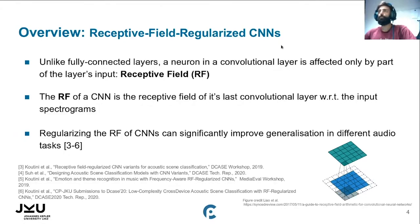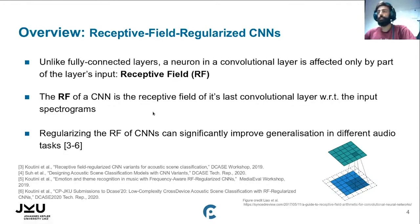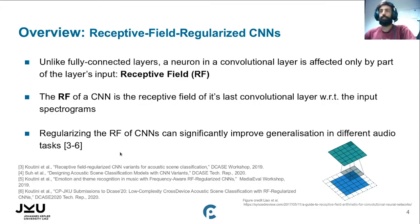Unlike fully connected layers, a neuron in a convolution layer is only affected by part of the layer input. This is what we call the Receptive Field. An input outside the Receptive Field doesn't affect the neuron activation or output. We define the Receptive Field of the whole CNN as the receptive field of the last layer with respect to the input spectrograms. Regularizing the Receptive Field of a CNN has shown to improve generalization in different audio tasks, such as emotion and theme recognition in music and acoustic scene classification. The top ranks in both acoustic scene classification tasks this year use Receptive Field Regularized CNNs.